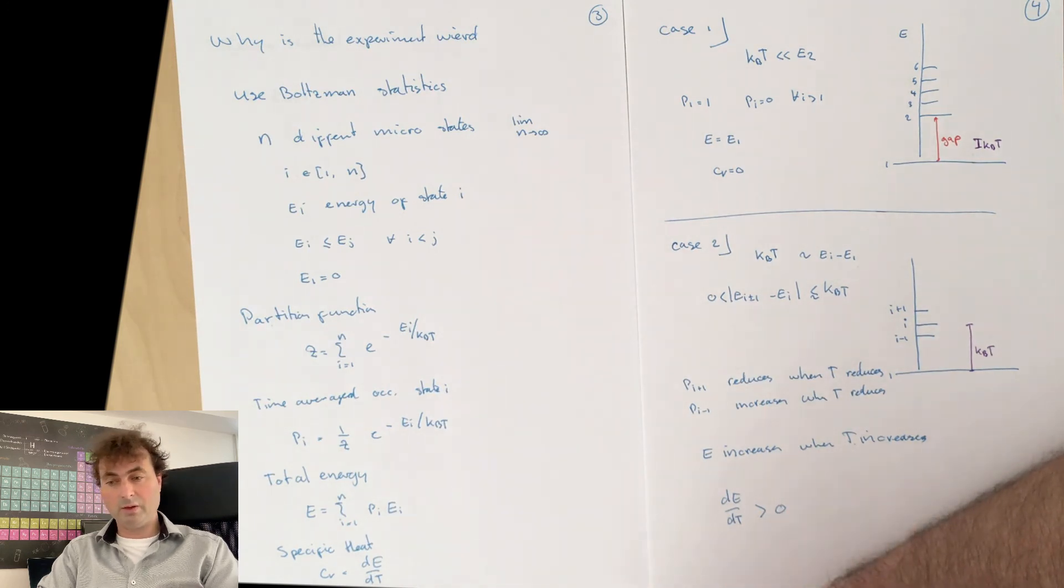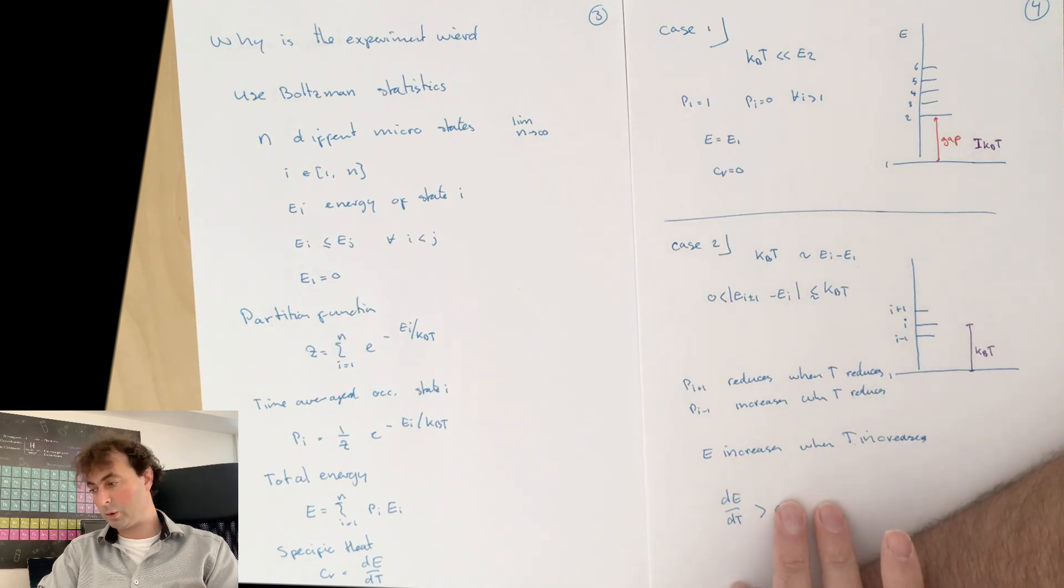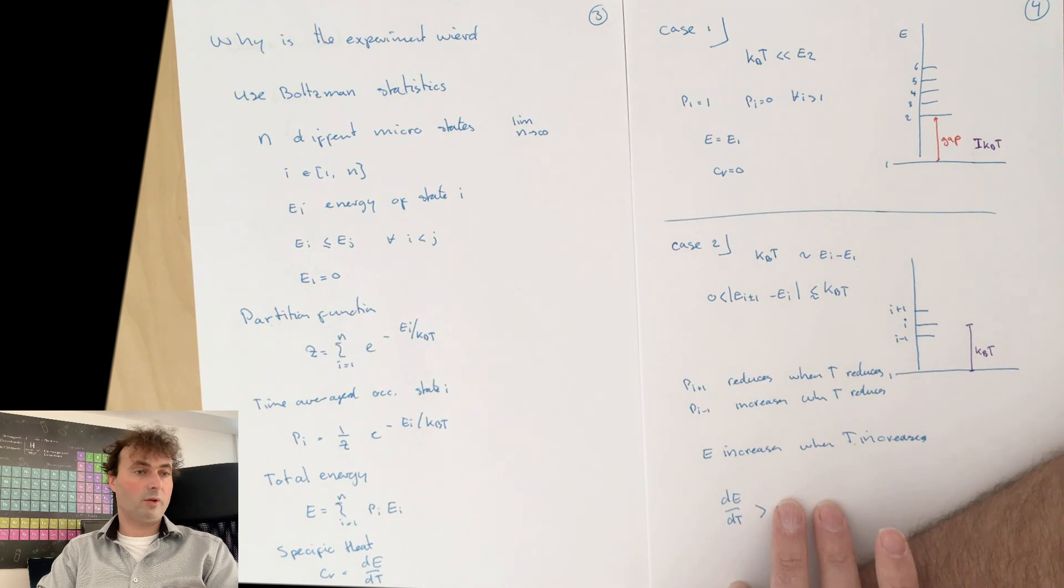Next week we'll introduce the Sommerfeld model. And the really strange part for the people at that time is that that didn't solve the problem. Aluminum still has the same Hall coefficient in the Sommerfeld model as it has in the Drude model. One reason to start with the Drude model is that many of the results are just one-to-one equally valid in the Sommerfeld model.